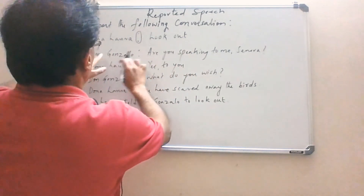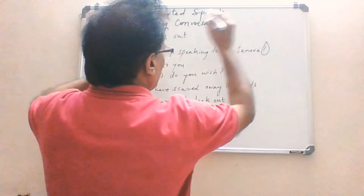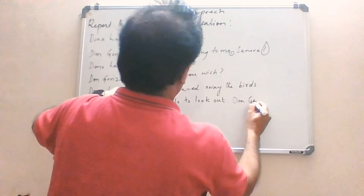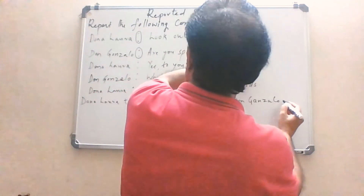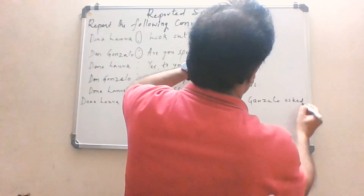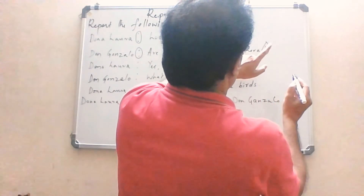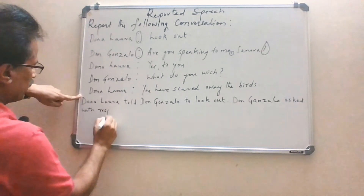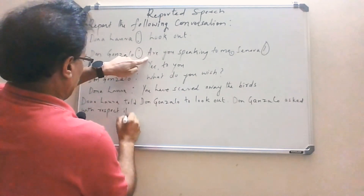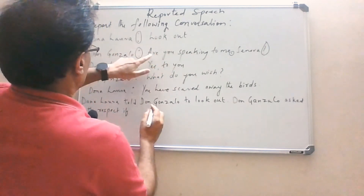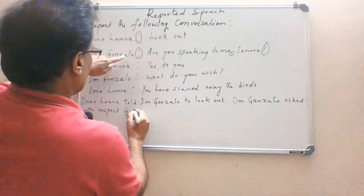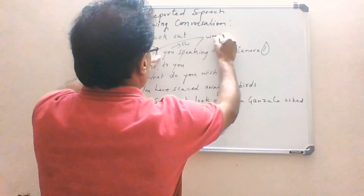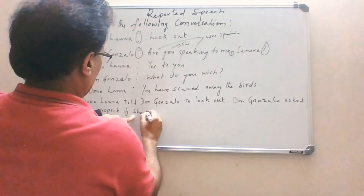Second dialogue — Don Gonzalo. Remove the colon, question mark, and comma. Don Gonzalo uses a yes/no form of question, so the reporting verb is 'asked'. 'Señora' is a Spanish term for ma'am or missus, so we can add 'asked with respect'. 'If' is used as conjunction. 'You' refers to Donna Laura, so 'you' changes to 'she'. 'Are speaking' changes to 'was speaking'. So: Don Gonzalo asked with respect if she was speaking to him.